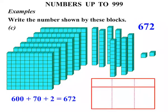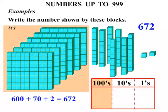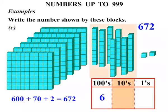Now using our table with columns. Ones. Tens. Hundreds. How many hundreds did we have? We had six. How many tens did we have? We've got seven. And how many ones? Two. So we're looking at the number there. Six. Seven. Two. Six hundred and seventy-two. Terrific.